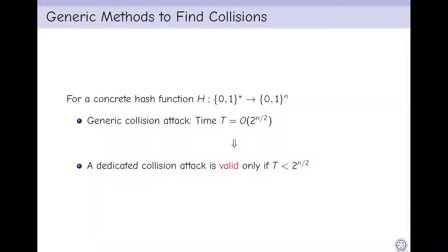What are the generic methods to find collisions? For a concrete hash function H, the generic collision attack complexity is O(2^(n/2)) using birthday paradox. A dedicated collision attack is valid only if T less than 2^(n/2).